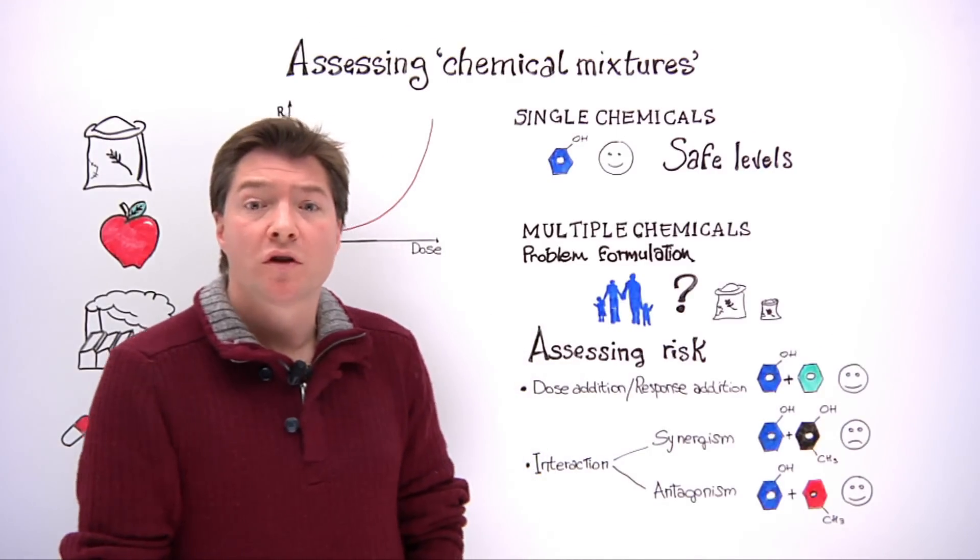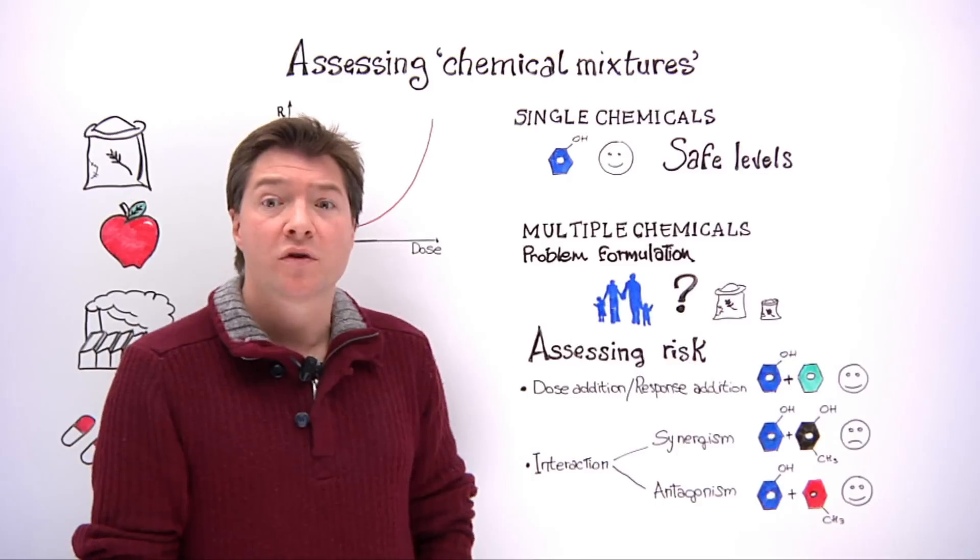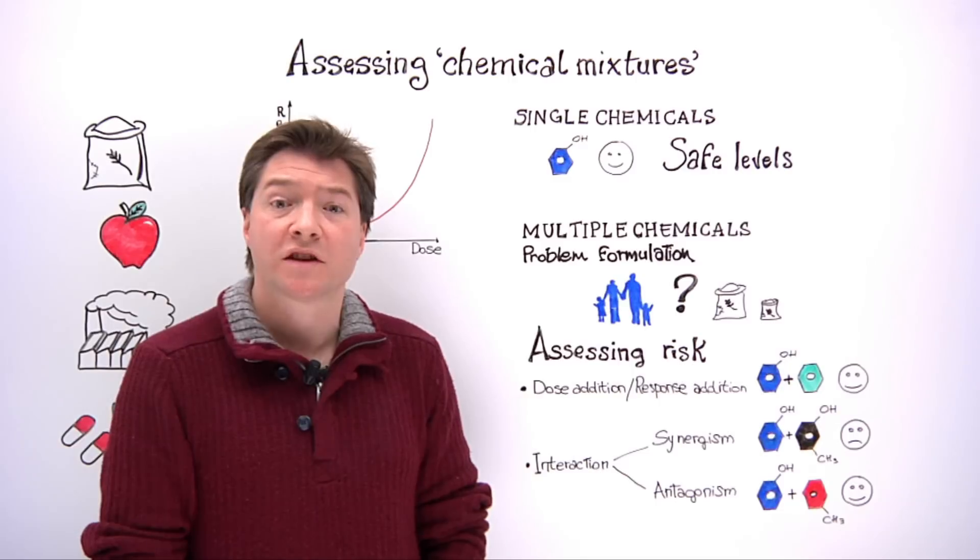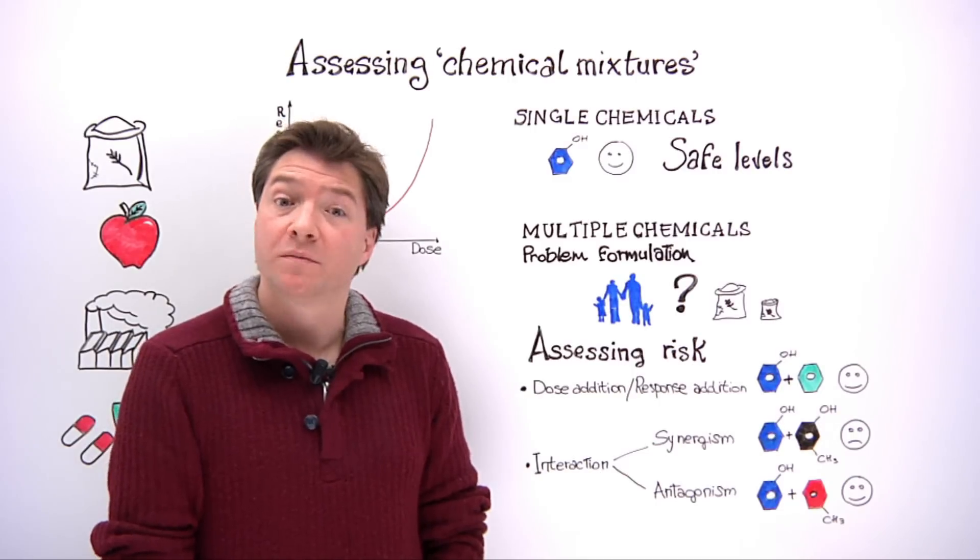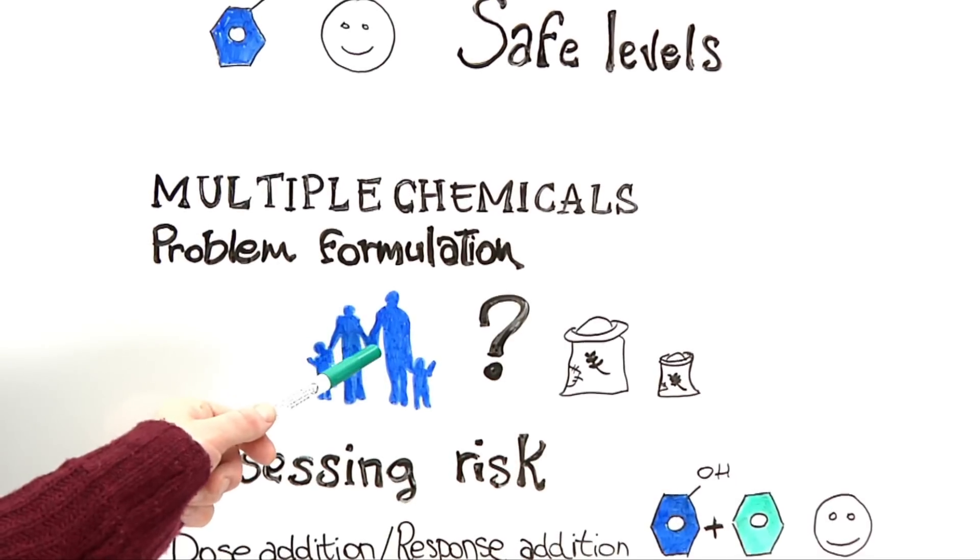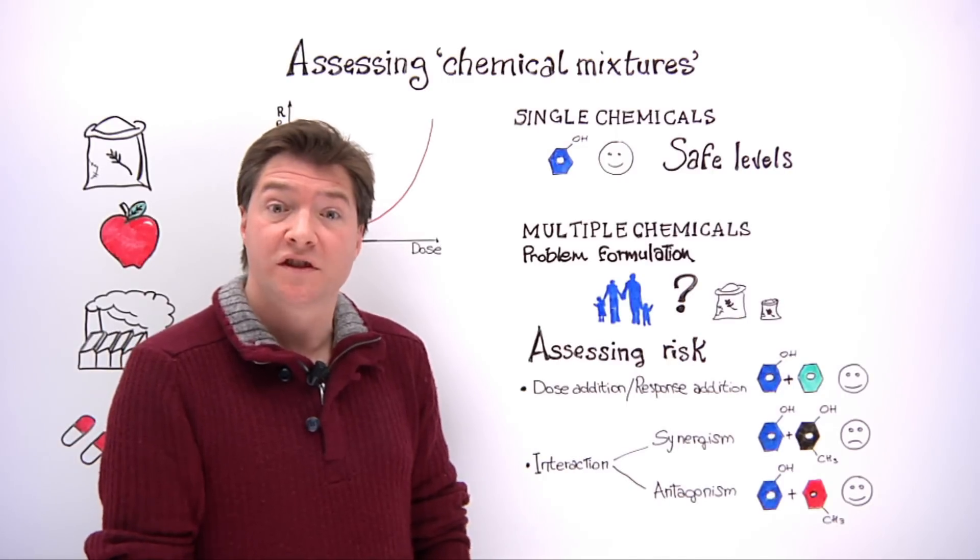First of all, the beginning of the process is the problem formulation to define whether a risk assessment for a group of chemicals is needed based on the nature of the exposure in consumers or depending on their toxicity. Who is exposed and by how much? Is the exposure a one-off or is it spread over time?